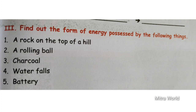Next, third section — find out the form of energy possessed by the following things. First: a rock on top of a hill possesses potential energy. Next one: a rolling ball. A rolling ball possesses kinetic energy. Very good children!